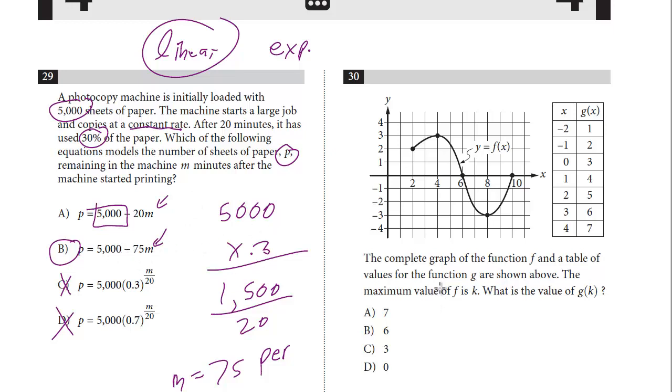All right, let's take a look at question number 30. The complete graph of the function f and table of values for function g are shown above. The maximum value of f is k. What is g of k? So here's the function y equals f of x.